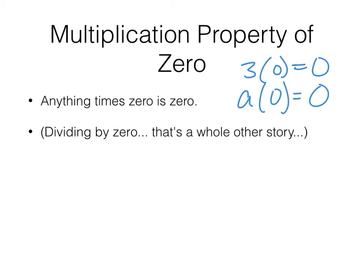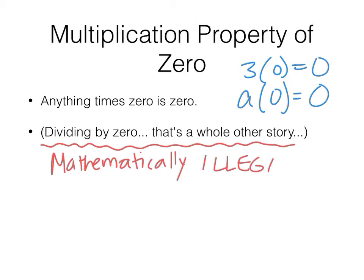Now, this is a good chance for me to talk about this right here. Dividing by zero is a whole other story. Let's take a brief minute for you to put into your notes and into your brain why you are not allowed to divide by zero. Why it is basically mathematically illegal for you to divide by zero. Mathematically illegal.